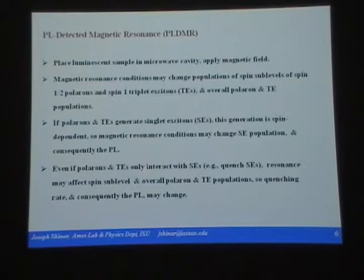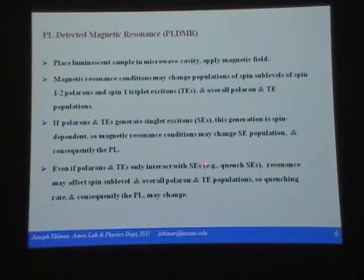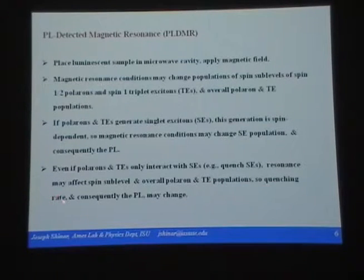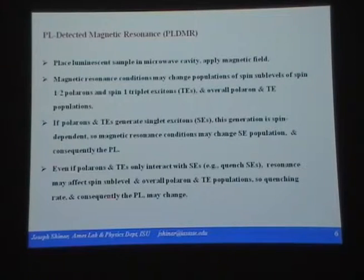Another very important possibility: even if polarons and triplet excitons only interact with singlet excitons — they don't actually recombine to give them — for example, they might quench singlet excitons. Resonance may affect the spin sub-level and overall population of polarons and triplet excitons. So the quenching rate will change because you have more or less polarons and triplet excitons. If you have less, you'll have less quenching. If you have more, you'll have more quenching. And consequently the PL will change.